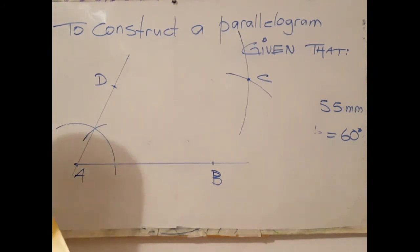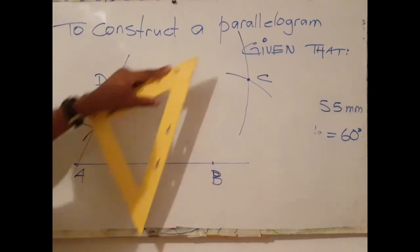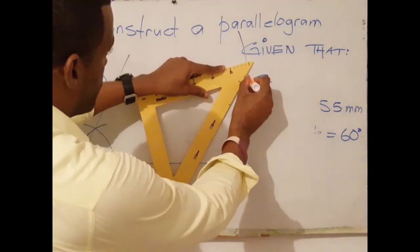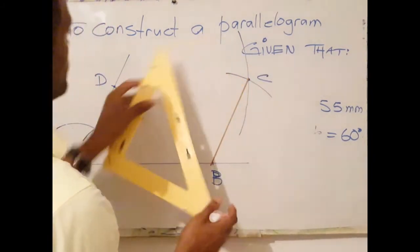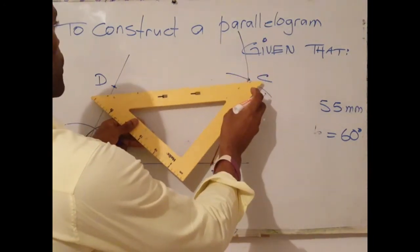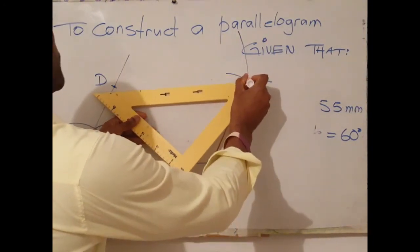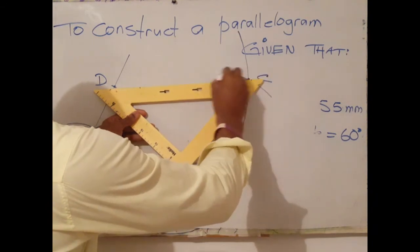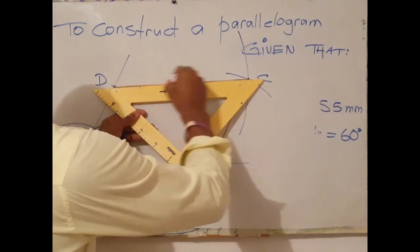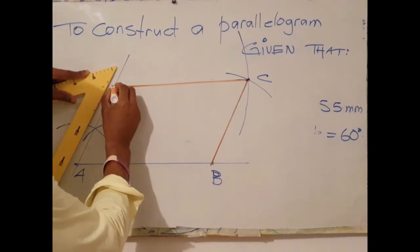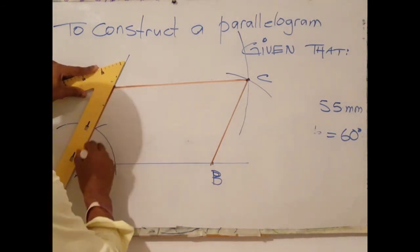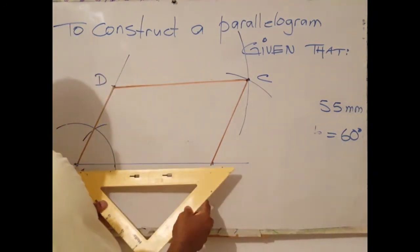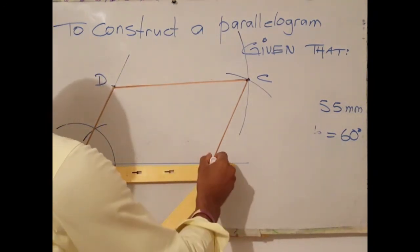Next step is to join B to C. Place my pencil first at C, or in this case a marker. Then join BC to D. Brighten up A to D and also AB.